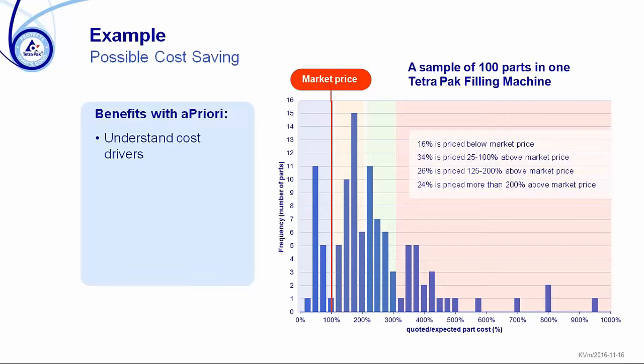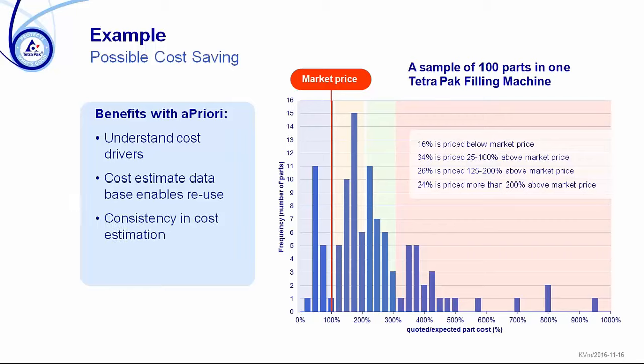There might be reasons for the differences, so it's important not to treat it as absolute fact. But the benefits we've seen with aPriori include: we do understand the cost drivers in the parts — it might be very small changes, for example on tolerances, that make a big difference in cost. The cost estimates database enables reuse of estimates, and we can go back and compare when we have made changes. We have consistency in cost estimation which makes it easier to discuss with the supplier when you have differences. Used in the right way, it's a very good base for negotiation.